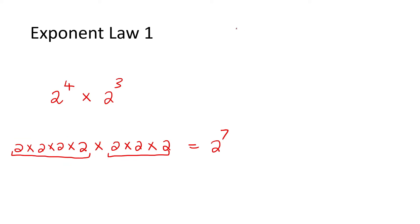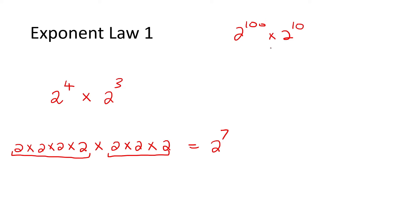So that's the answer, but this is going to take us a little bit too long if we have to write it out like that every time. Because what if I gave you 2 to the power of 100 multiplied by 2 to the power of 10? We can't go write this out 100 times. By the time the teacher says put your pens down, the exam is finished, you're going to have finished one question. There has to be a better way to do this.